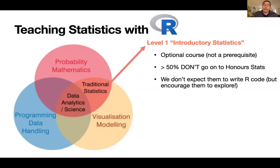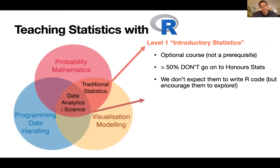One example is a level-one introductory statistics course — a traditional, optional course open to anyone with some high school maths, enrolling around 170 to 200 students each year. Over half of those students don't go on to study statistics further, so coding in R is not an intended learning outcome, though students are encouraged to explore it if interested.